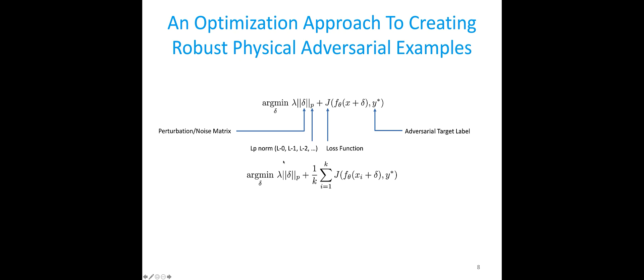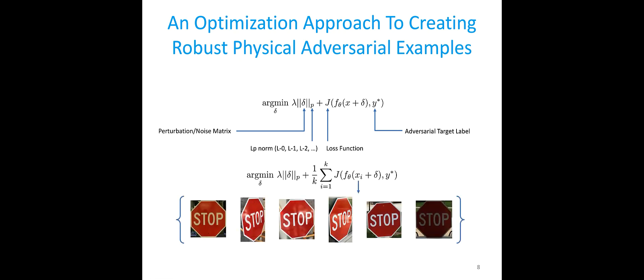Based on this goal, we discuss an improved loss function. Basically, it uses the expectation over transformations — instead of a single loss function, we draw several instances x_i from a set of distributions, including physical conditions such as angles, distances, and lighting, and then we minimize this objective function over this expectation, such that the perturbation is a kind of universal perturbation that can fool the machine learning model under different conditions.